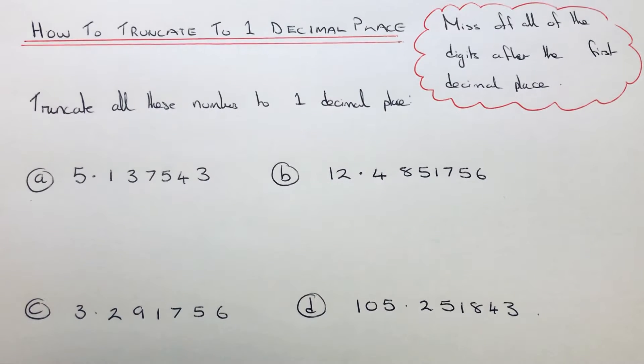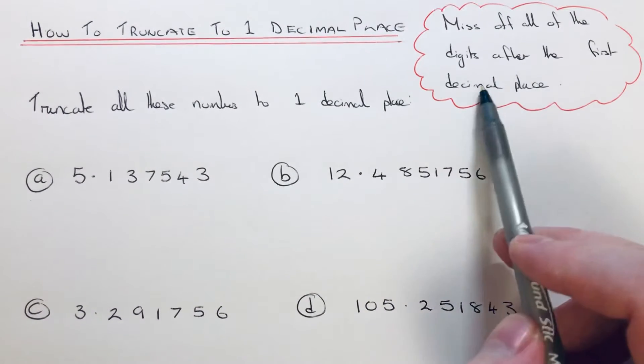Hi guys, welcome back. This is Maths 3000. Today I'm going to show you how to truncate a number to one decimal place. To do this, you just need to miss off all of the digits after the first decimal place.